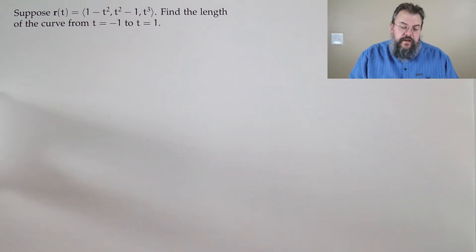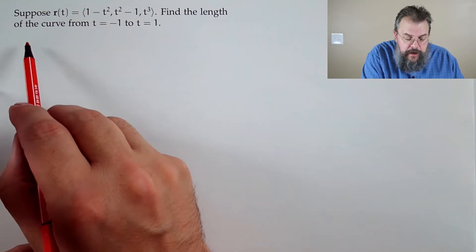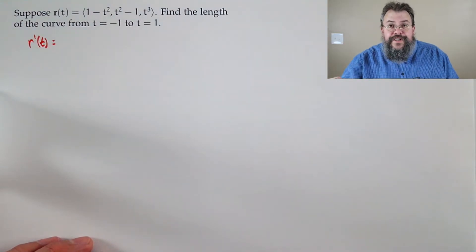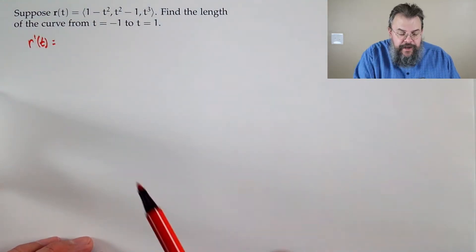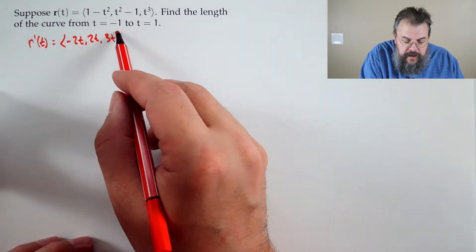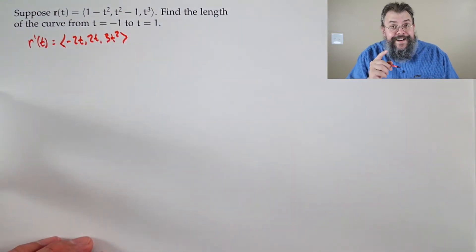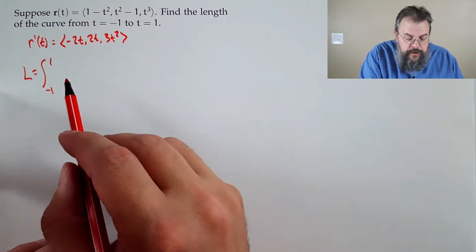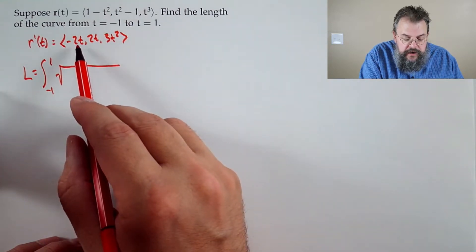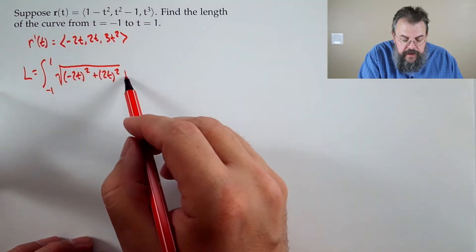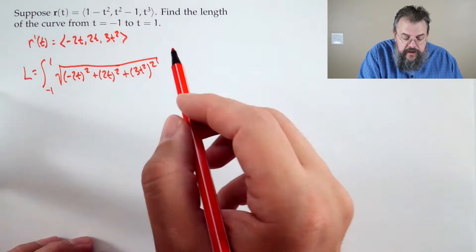We'll start by taking R′(t), because R′(t) talks about how we're moving — it's the motion. When we're talking about distance, we're after understanding something about motion. So we take the derivative of each slot. Our length, adding up start to finish, will be the integral of the square root of (−2t)² + (2t)² + (3t²)² dt.